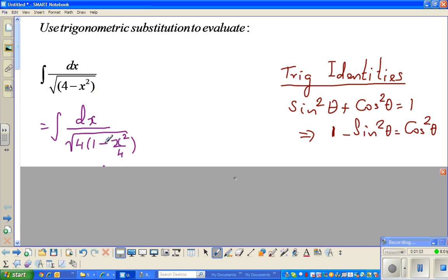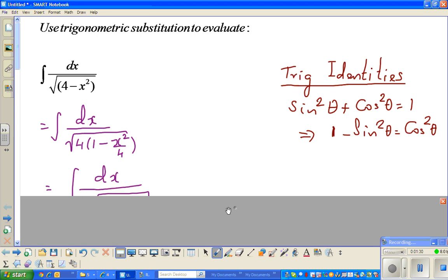The reason I factored out 4 is to write in this form because I know 1 minus sine squared theta equals cos squared theta. I am comparing 1 minus x squared over 4 with this form and I am going to substitute x squared over 4 as sine squared theta. That is what I have done.